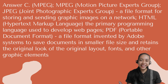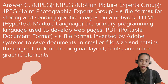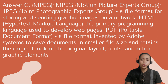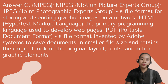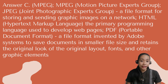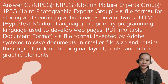The correct answer is letter C — MPEG, which means Motion Picture Experts Group. JPEG means Joint Photographic Experts Group — it is a file format for storing and sending graphic images on a network. HTML means Hypertext Markup Language — it is the primary programming language used to develop web pages. And PDF, or Portable Document Format, is a file format invented by Adobe Systems to save documents in smaller file size while retaining the original look, layout, fonts, and other graphic elements.